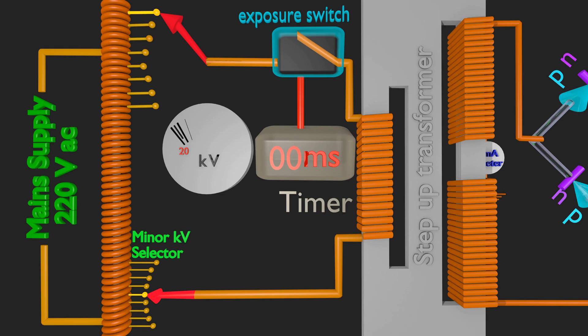A voltmeter called preloading KVP meter is placed at primary of high-tension transformer. But it is calibrated to show voltage across X-ray tube during exposure.